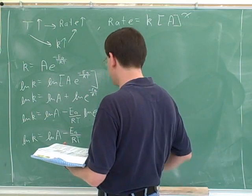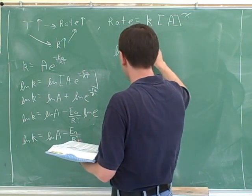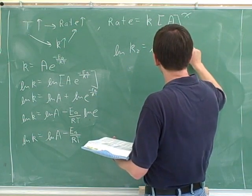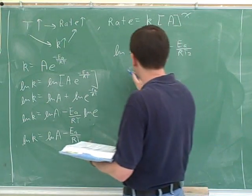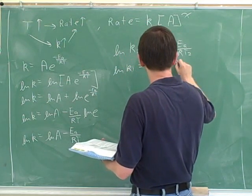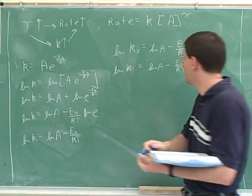In fact, should we actually go through that? So let's say we've got the natural log of k2 equals natural log of A minus Ea over RT2. And we could have the natural log of k1 equals natural log of A minus Ea over RT1.